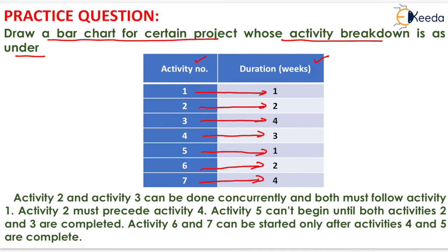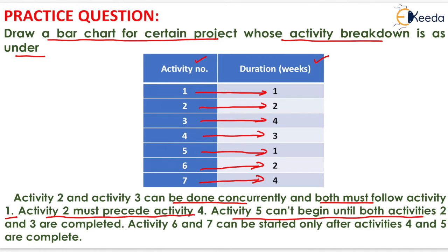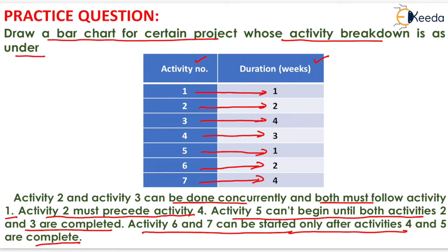The relationship is as follows: activity 2 and 3 can be done concurrently and both must follow activity 1. Activity 2 must precede activity 4, meaning activity 4 starts only when activity 2 is completed. Activity 5 cannot begin until both activity 2 and 3 are completed. Activity 6 and 7 can be started only after activity 4 and 5 are completed.